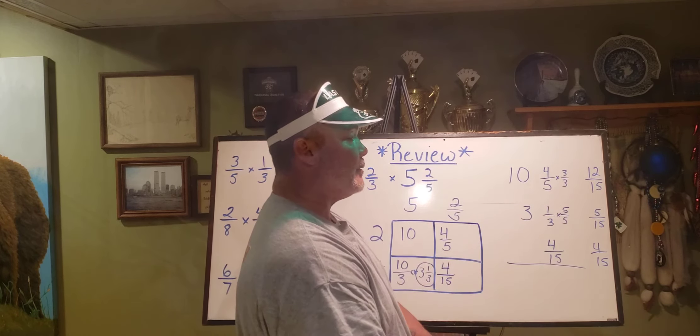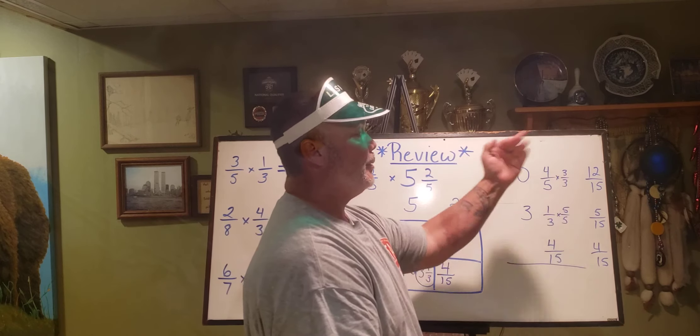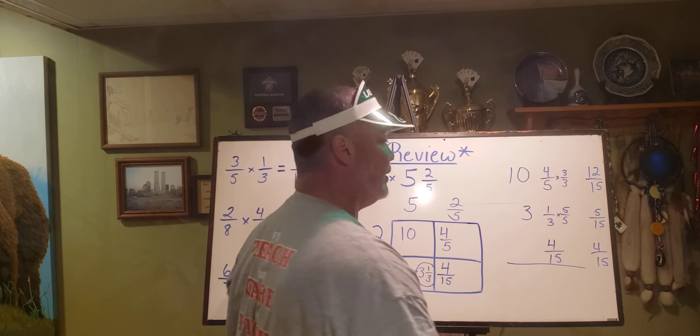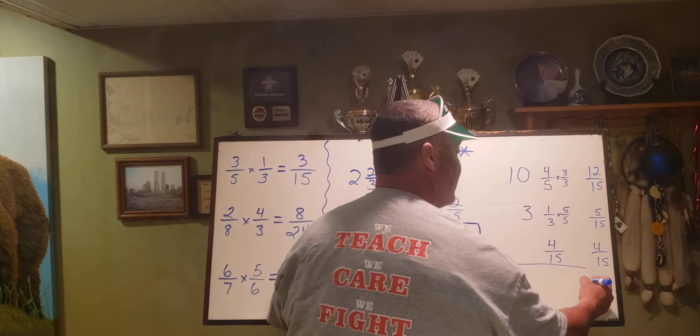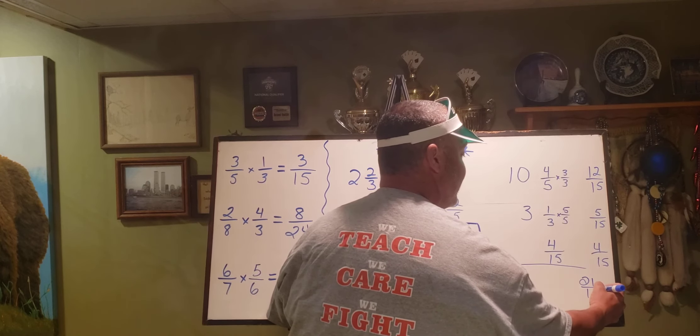So I'm going to add my numerators. Four and five is nine. Nine plus twelve is twenty-one. This is going to give me an improper fraction, which is okay. So I have twenty-one fifteenths.